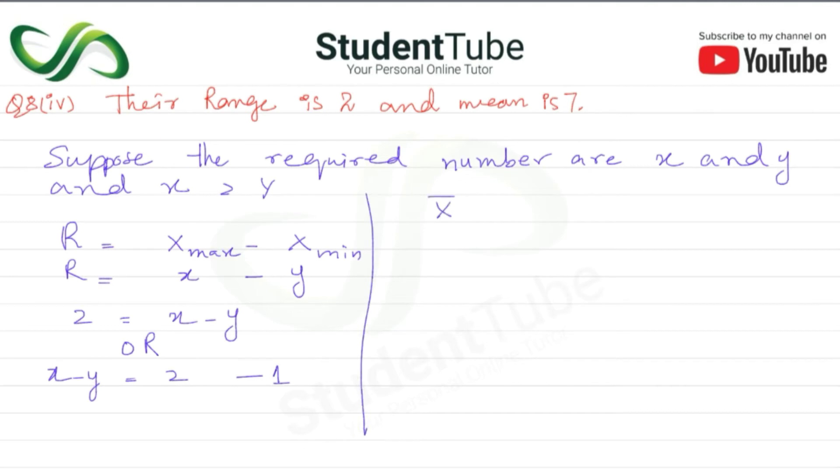Is ke baad yaha par mean ka dekhe to mean is equal to x plus y upon 2. So mean has 7 is equal to x plus y upon 2. So two sevens of 14 is equal to x plus y.